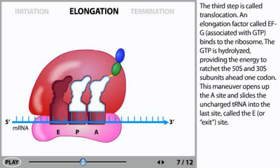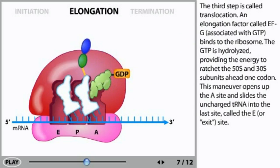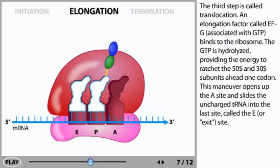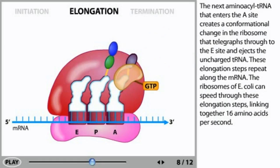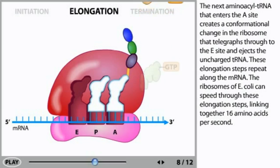The third step is called translocation. An elongation factor called EFG associated with GTP binds to the ribosome. The GTP is hydrolyzed, providing the energy to ratchet the 50S and 30S subunits ahead one codon. This maneuver opens up the A site and slides the uncharged tRNA into the last site, called the E or exit site. The next aminoacyl tRNA that enters the A site creates a conformational change in the ribosome that telegraphs through to the E site and ejects the uncharged tRNA.